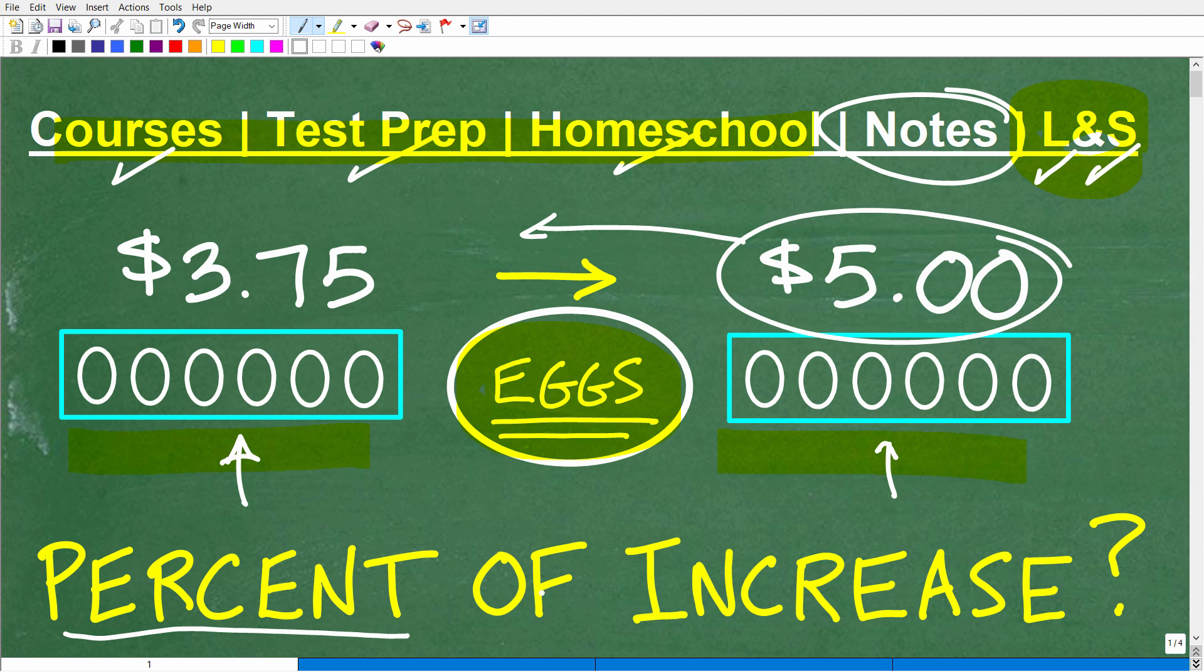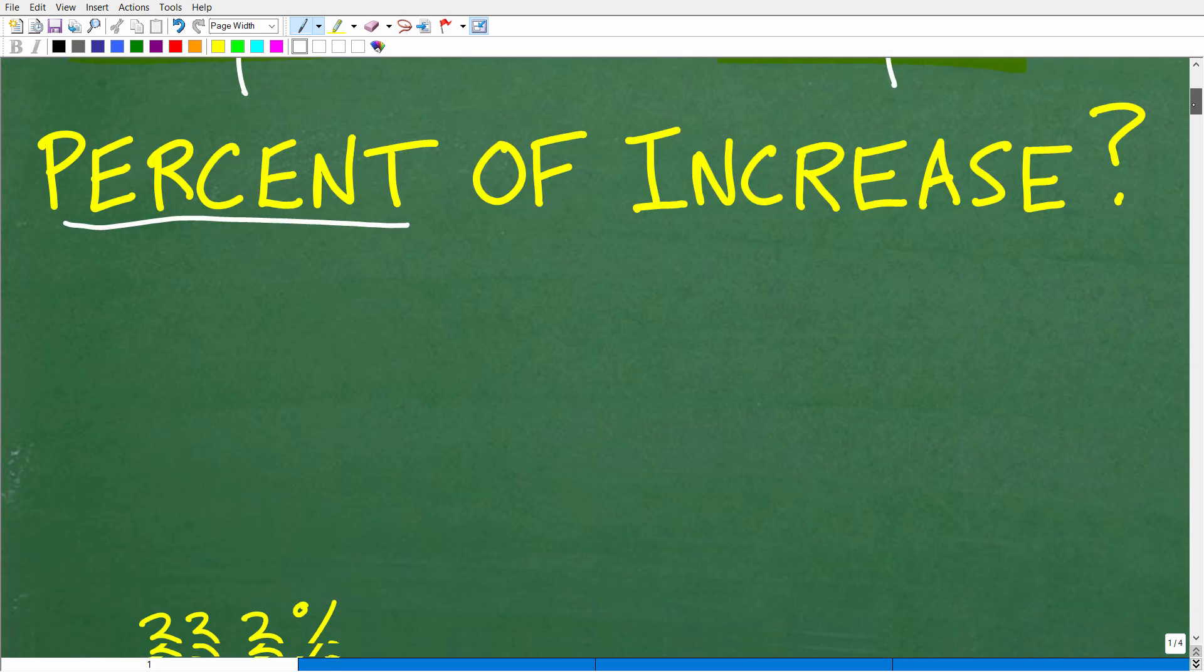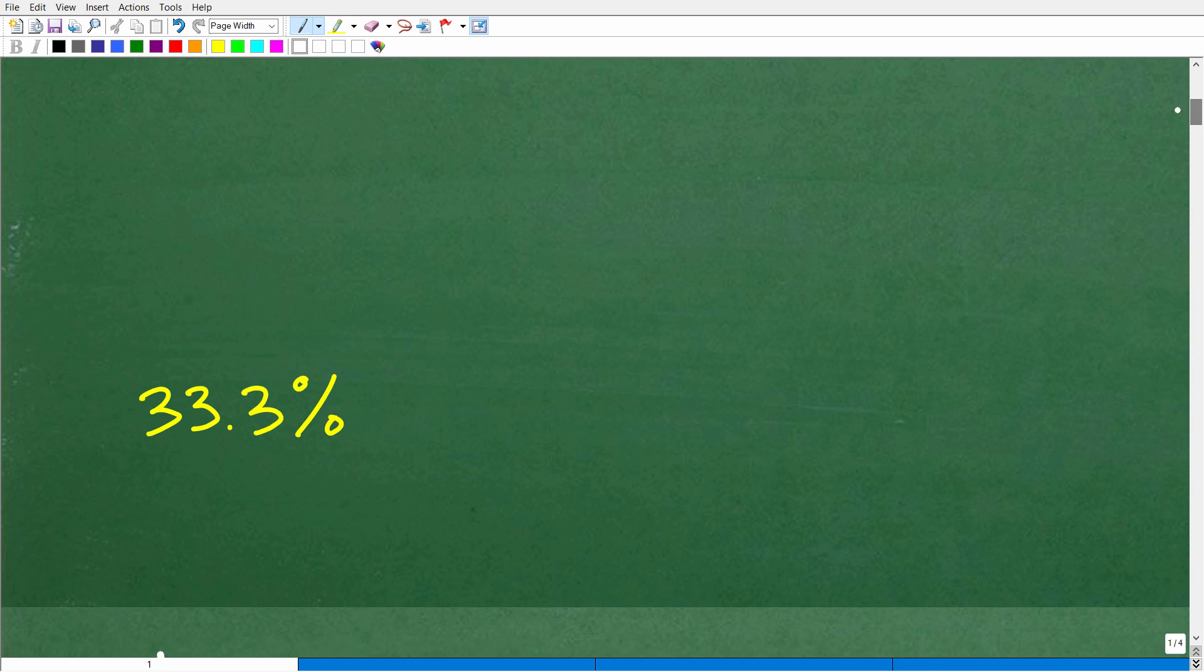But anyways, let's figure out the percent of increase. This dozen of eggs went from $3.75 to $5. What was the percent of increase? Well, here it is, 33.3%. That's how much the dozen of eggs increased in price.